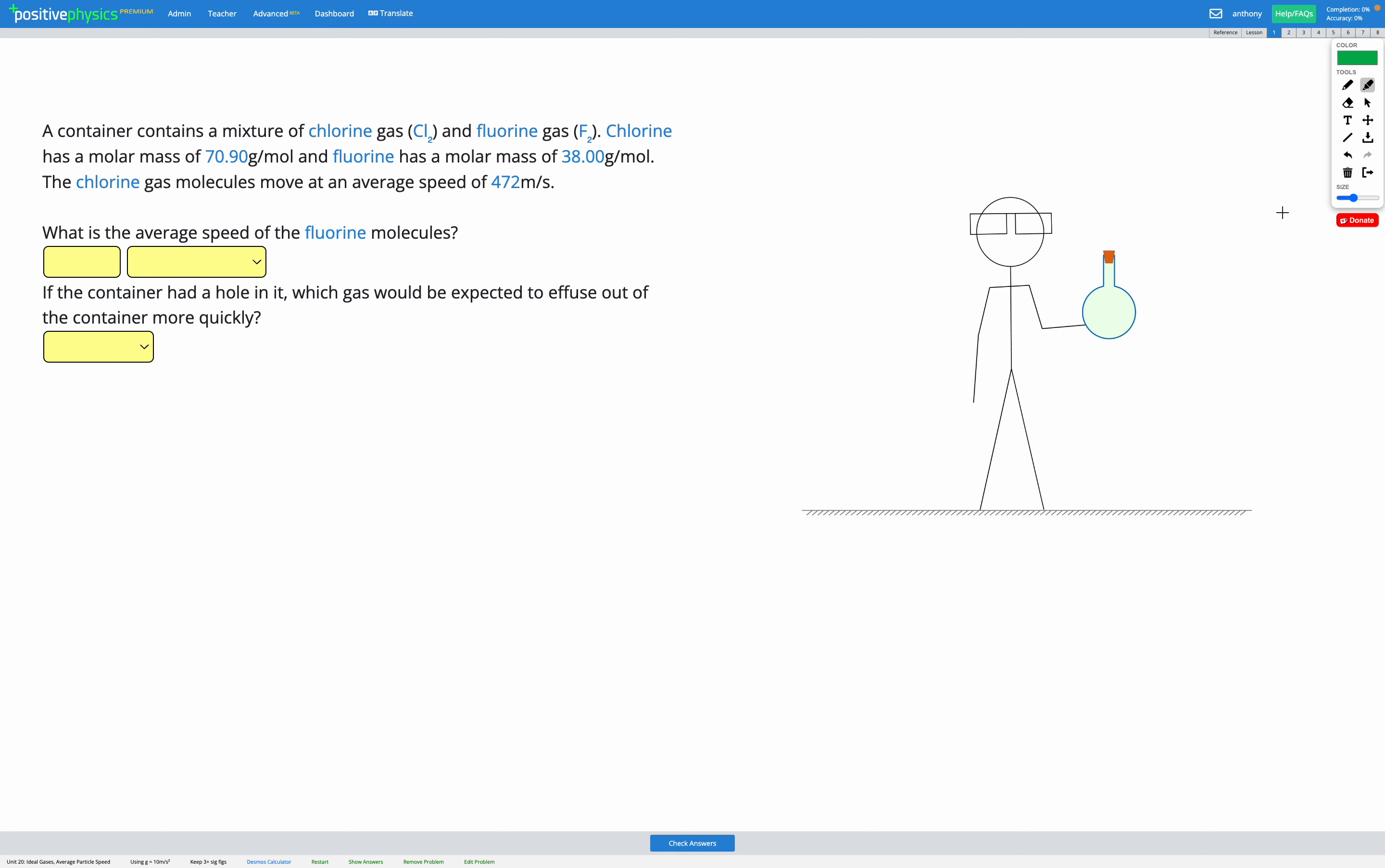In this question, we have a container with a mixture of chlorine gas and fluorine gas. We're told chlorine gas has a molar mass of 70.90 grams per mole, and fluorine gas has a molar mass of 38.00 grams per mole.